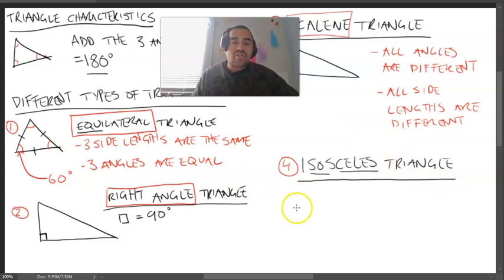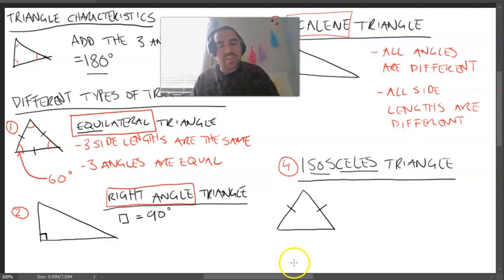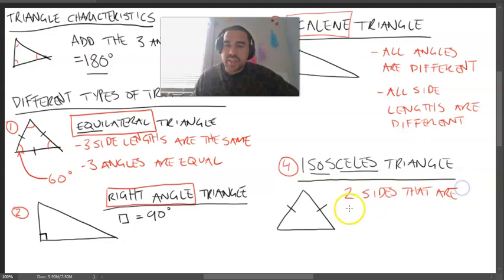An isosceles triangle, when drawn, will have... Sometimes it might look like this, or sometimes it might look like this. All this is showing is that there are two sides that are the same length, that are the same length.